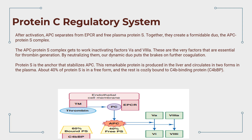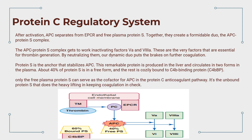Protein S is produced in the liver and circulates in two forms in the plasma. About 40% of protein S is in a free form, and the rest is covalently bound to C4B-binding protein, C4BBP. Only the free plasma protein S can serve as the cofactor for APC in the protein C anticoagulant pathway — it's the unbound protein S that does the heavy lifting in keeping coagulation in check.